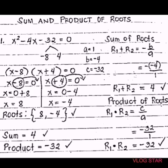For the product of roots, we have R₁ times R₂ equals C over A. Substituting: the value of C is negative 32, over A which is 1. So negative 32 over 1 — therefore the product of roots is negative 32.